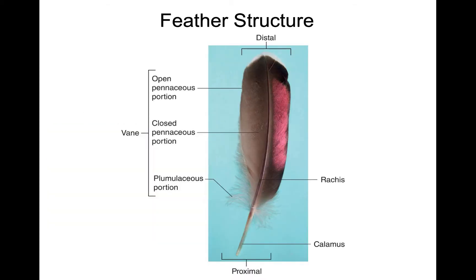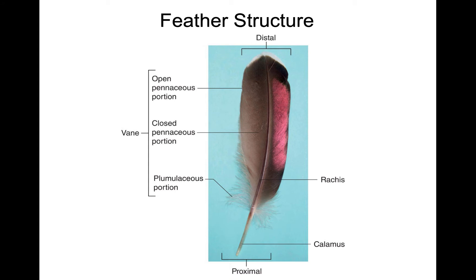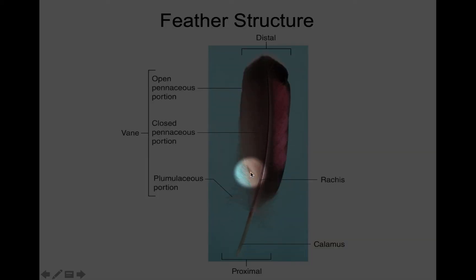Let's look at the basic structure of a feather — specifically a flight feather. We have a proximal and distal end. The proximal end is where it inserts into the skin. The distal end is the tip farthest away from the body. A contour or flight feather has this nice integrated surface called the vane, with the rachis or support shaft running down the middle.